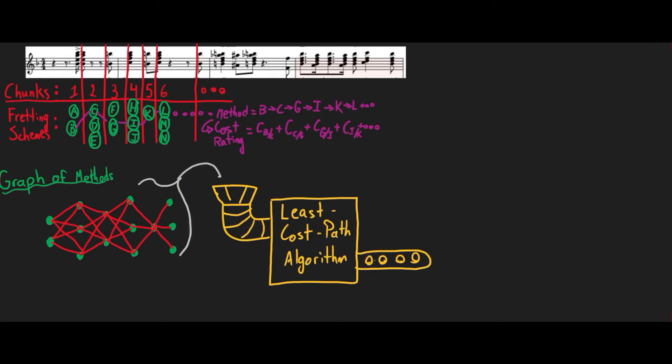Again, least cost path algorithms provide a solution to find which path should be taken through this network. By assigning a difficulty cost based on ergonomics to the transitions between fretting schemes, employing these well understood algorithms provides a solution.